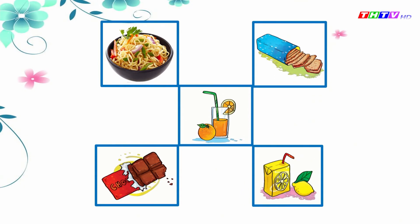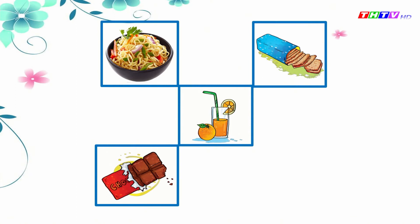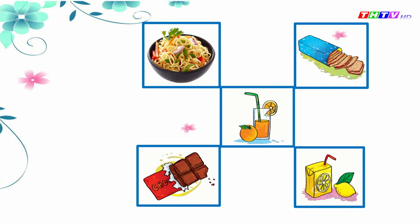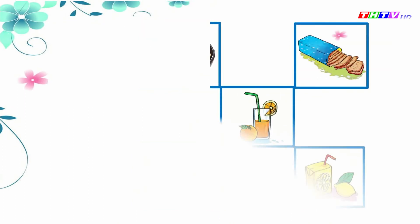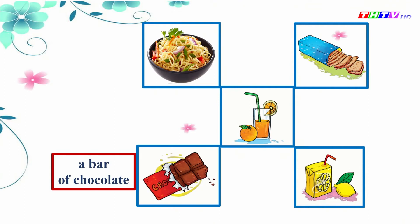Next one. Look and tell me, what's missing? A carton of lemonade. Excellent. Next one. Look. What's missing? A bar of chocolate. Very good.